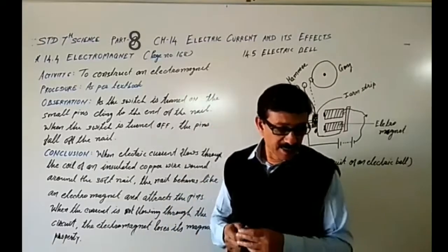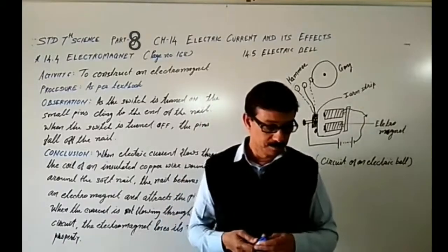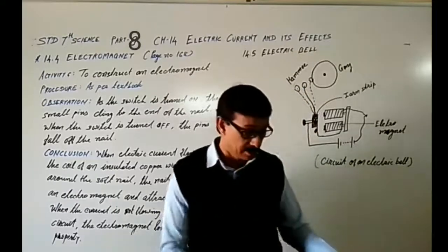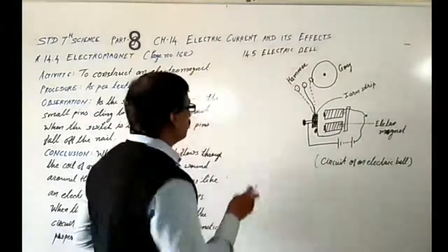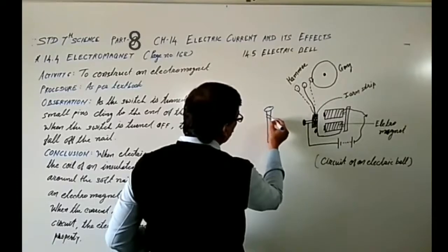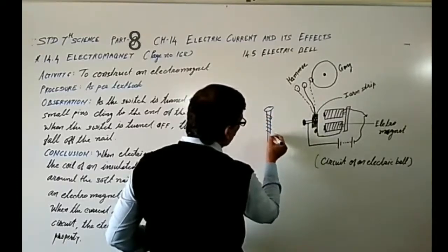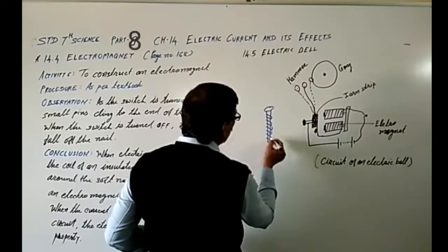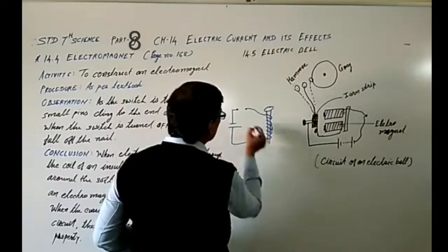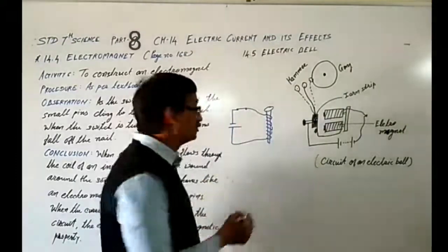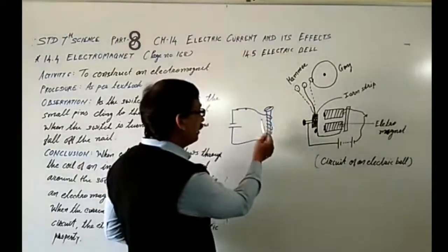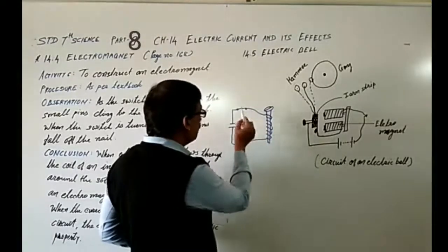Wind the wire tightly around the nail in the form of a coil. Connect the free ends of the wire to the terminals of a cell through a switch, as shown in the figure. Let me show you that figure — it is very easy to draw. This is an iron nail, and what we have to do is wind the wire around it and connect the wire with a battery or a cell, along with a switch like this.